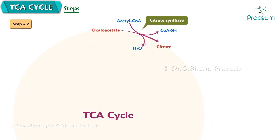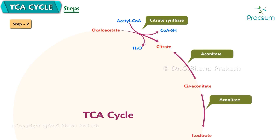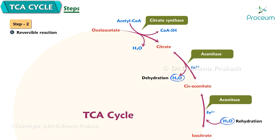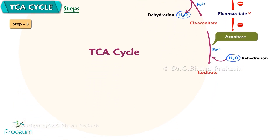Step 2: Conversion of citrate to isocitrate. Citrate is isomerized to isocitrate in two steps — dehydration to cis-aconitate and rehydration to isocitrate. It is a reversible reaction inhibited by fluoroacetate. The enzyme aconitase is a lyase.